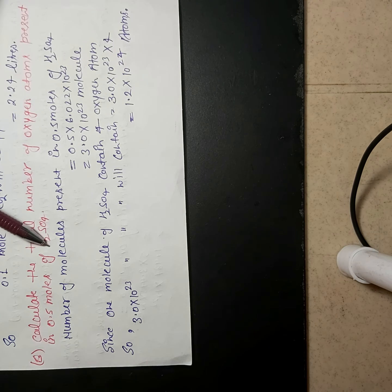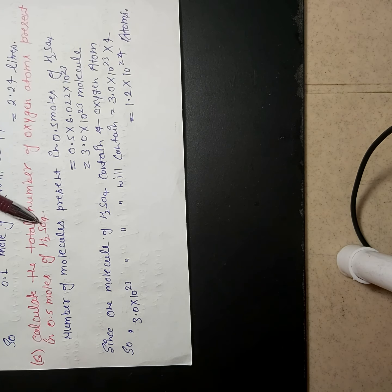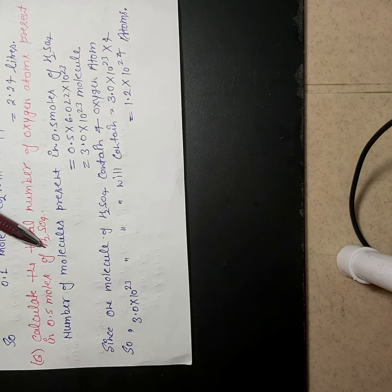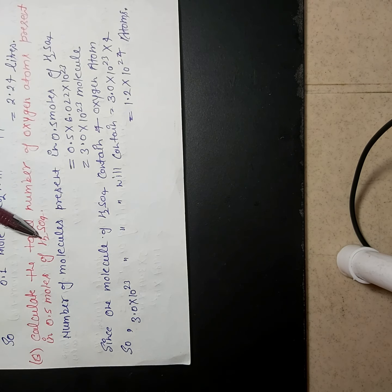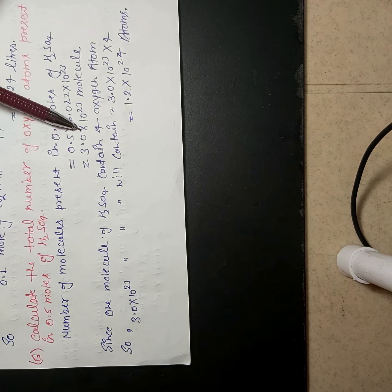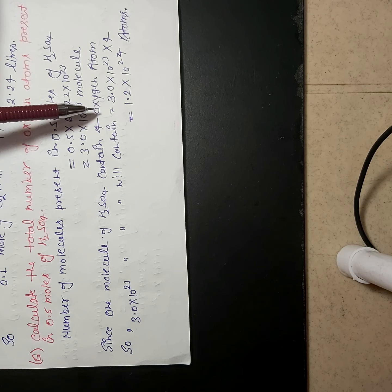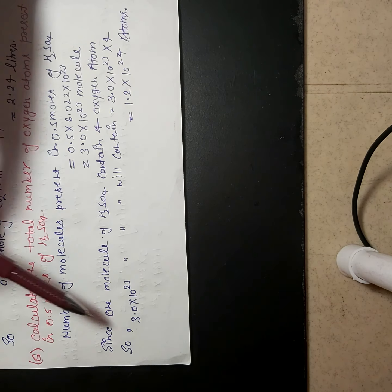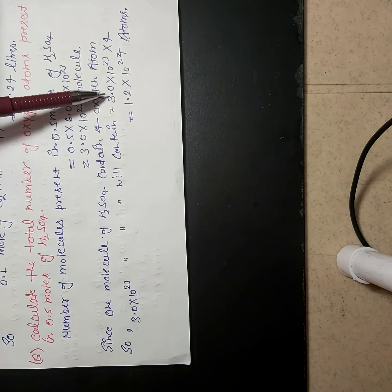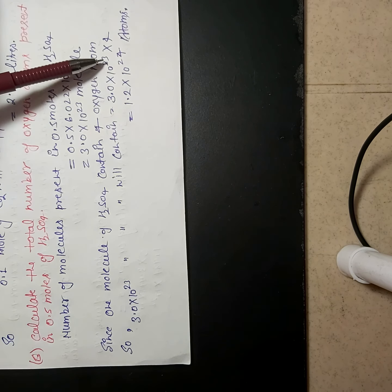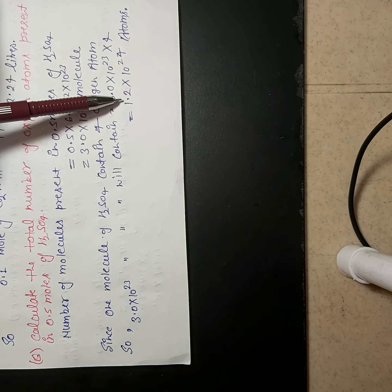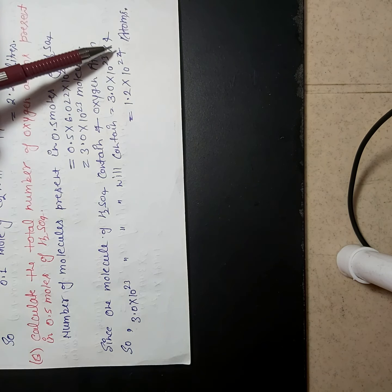By seeing the formula, we can easily identify that 4 oxygen atoms are present in 1 molecule of H₂SO₄. Since 1 molecule contains 4 oxygen atoms, then 3 × 10²³ molecules will contain 3 × 10²³ multiplied by 4, which equals 1.2 × 10²⁴ atoms.